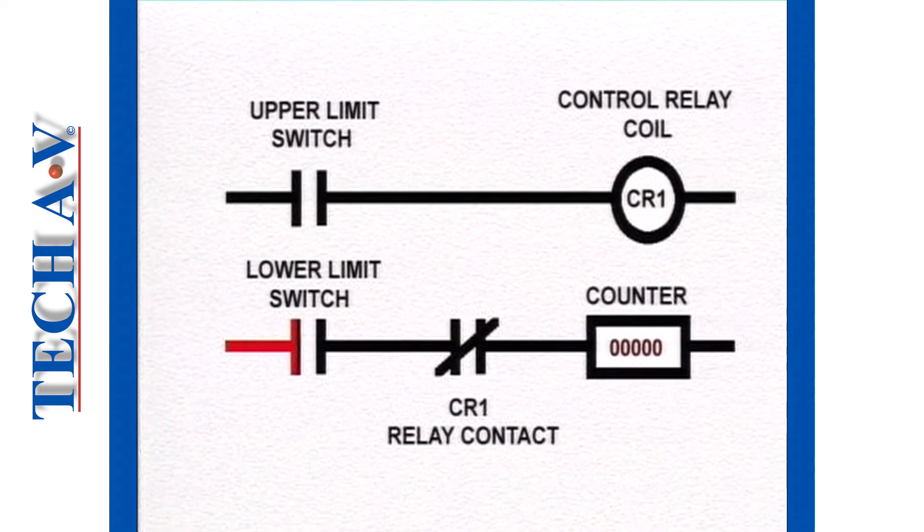This means that for power to reach the counter, both the lower limit switch and the contacts on the control relay must be closed.